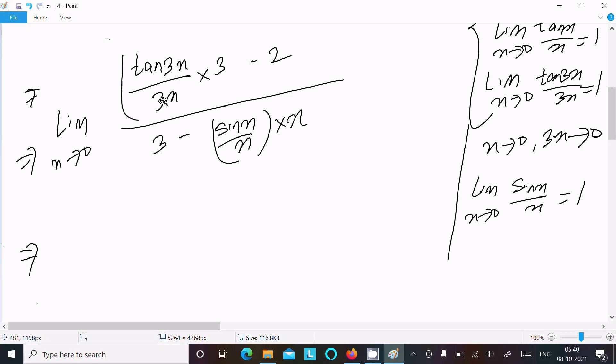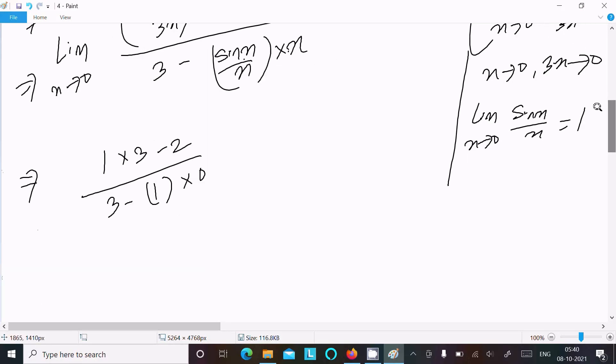So now here writing, this returns 1 times 3 minus 2, and this here 3, this returns 1, and x tends to 0 here gives 0. So after that, 3 minus 2, 3 minus 0, that is equal to 1 by 3.